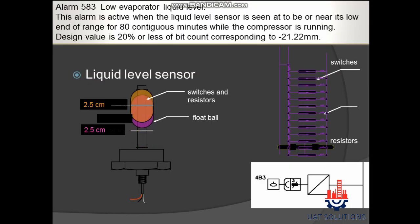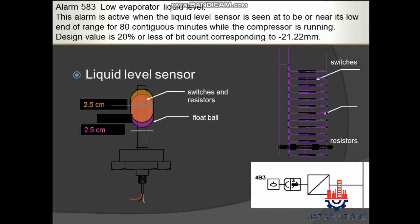Alarm 583 — Low Evaporator Liquid Level: This alarm is active when the liquid level sensor is seen to be at or near its low end of range for 80 contiguous minutes while the compressor is running. The design value is 20% or less of bit count, corresponding to minus 21.22 millimeters.